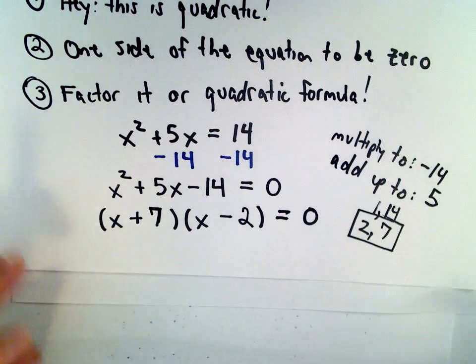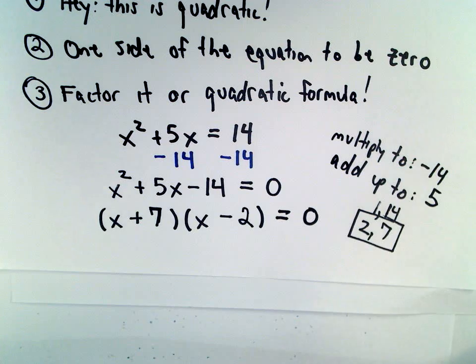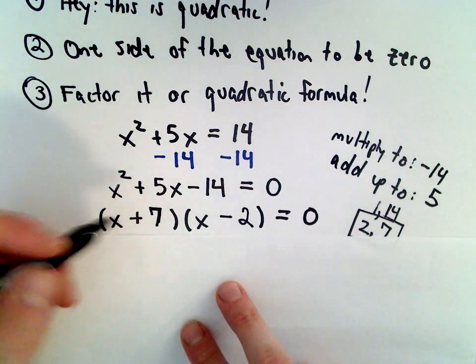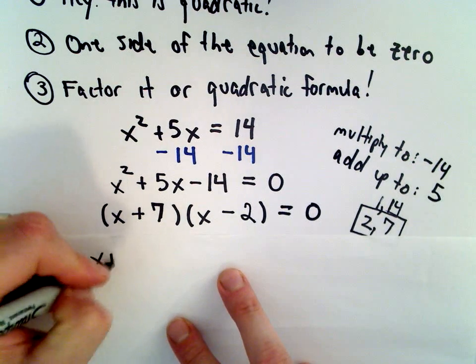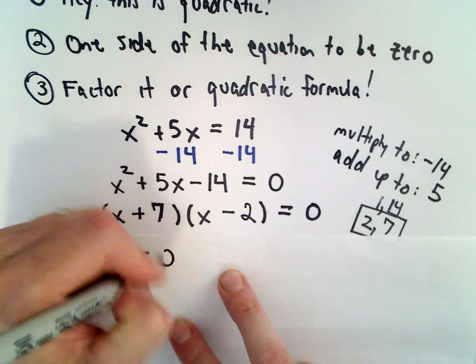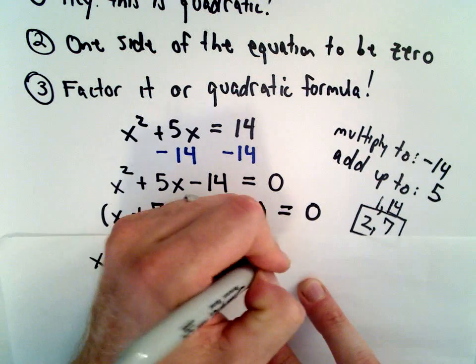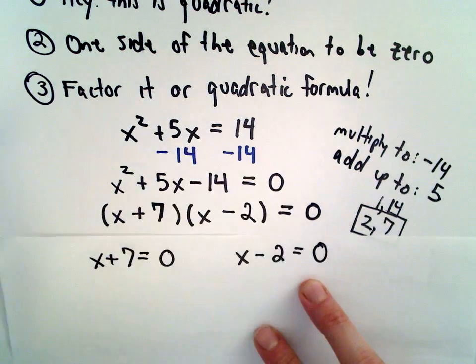Now that we have it factored, we simply take each factor and set it equal to 0. So, I'm going to take the factor x plus 7 and set that equal to 0. I'm going to take the factor x minus 2 and set it equal to 0.